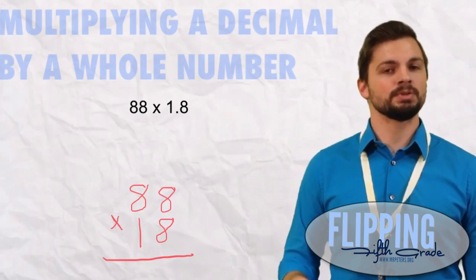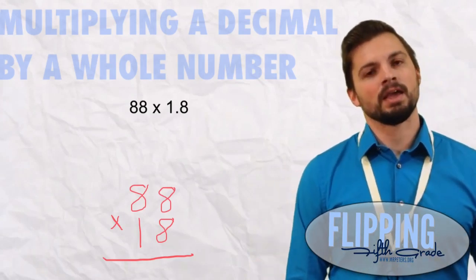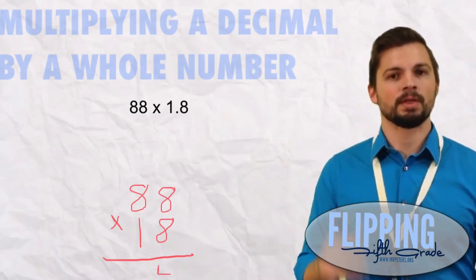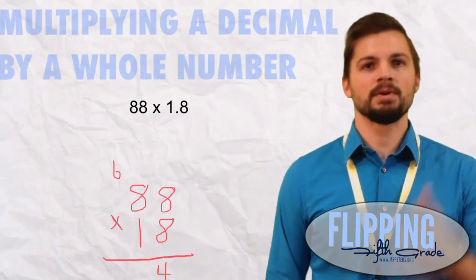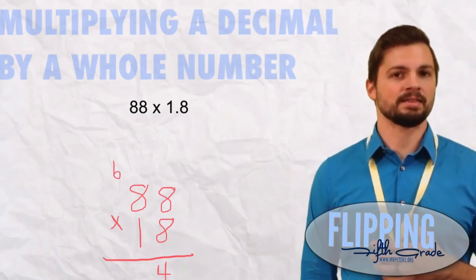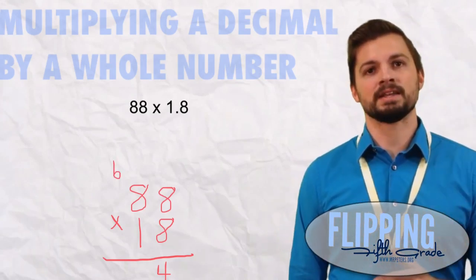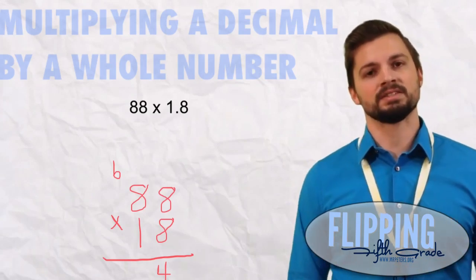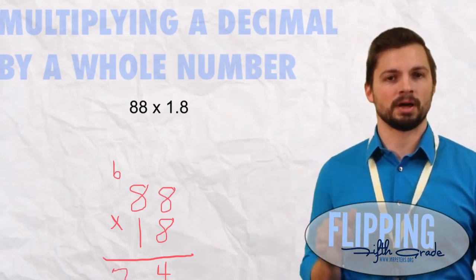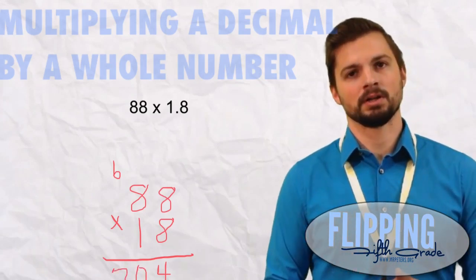First thing we need to do, we need to start on the bottom with our ones, that 8. 8 times 8 is 64. We put down that 4 and we carry the 6 above the 8 in the tens place. 8 times 8 again is 64 plus 6 is 70. So our first partial product is 704.